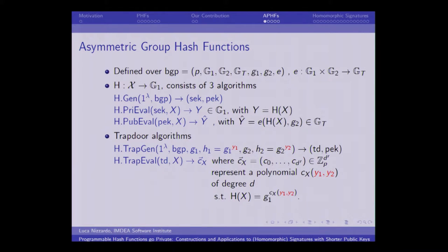Moreover, we have two trapdoor algorithms: a trapdoor generation algorithm and a trapdoor evaluation algorithm. The trapdoor generation takes the security parameter, the bilinear group description, two generators of the first group G1 and H1 = G1^{Y1}, and two generators of the second group G2 and H2 = G2^{Y2}, and outputs the trapdoor information and public key. The trapdoor evaluation algorithm, given the trapdoor and an input, outputs the description of a degree-D polynomial in variables Y1 and Y2 such that H(x) can be written as G1^{C_x(Y1, Y2)}.